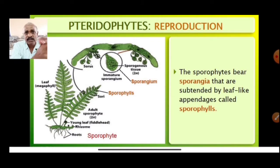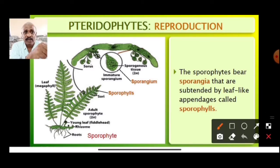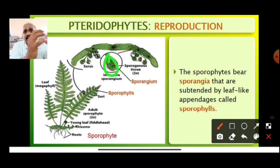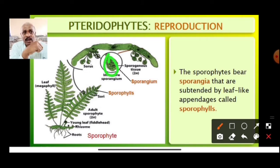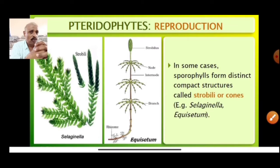The sporophytes bear the sporangia. The sporangia contain spores. Leaf-like appendages that bear sporangia are called sporophylls — 'phyll' means leaf, so sporophylls are leaves that bear sporangia. Hence we call them sporophylls.